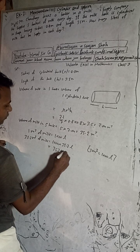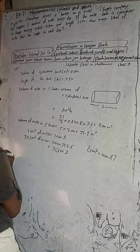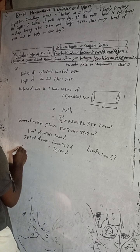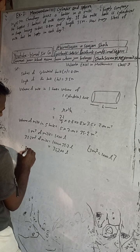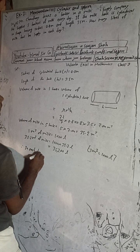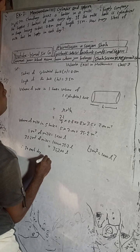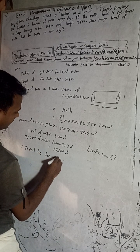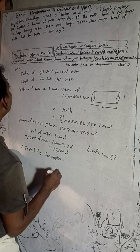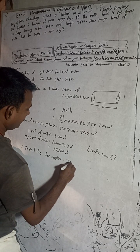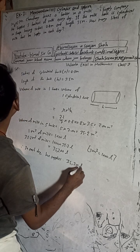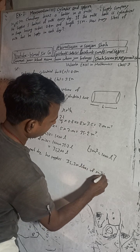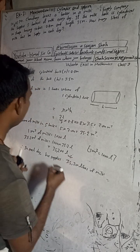So 35.2 cubic meters equals 35,200 liters. Therefore, in each day he supplies 35,200 liters of milk. This is the solution.